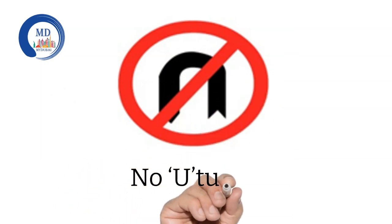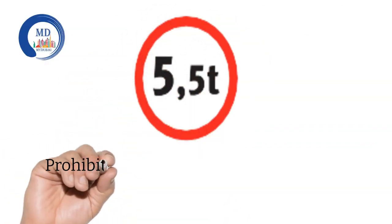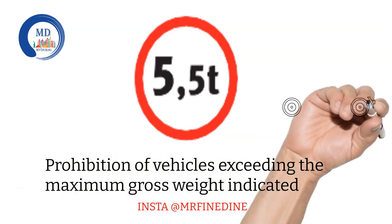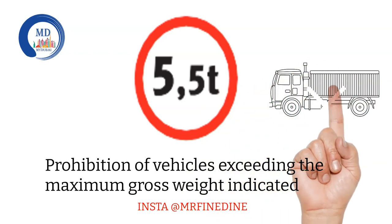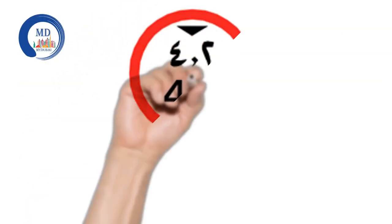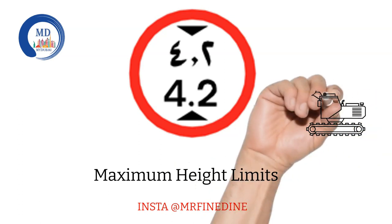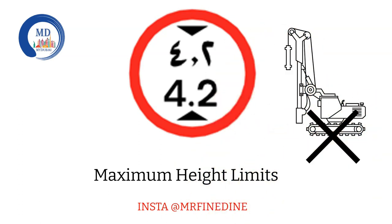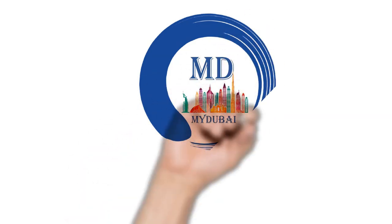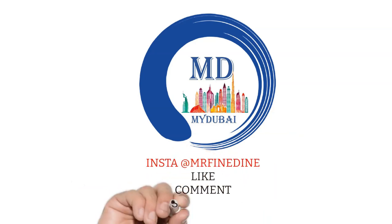This sign means no U-turns — if you see this sign, you cannot take a U-turn. This sign means vehicles exceeding the maximum gross weight indicated are not allowed — the figure inside tells you the limit, and if your vehicle weight is over that, you cannot enter the road. This sign shows the maximum height limit allowed on the road — for example, 4.2 meters. The rest of the signs will be covered in part 2. If you enjoyed this video, please subscribe, like, and comment. Thank you for watching — see you in the next video.